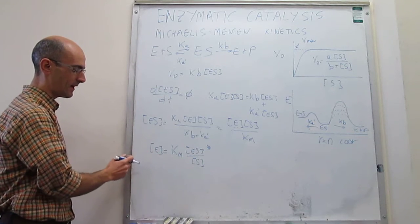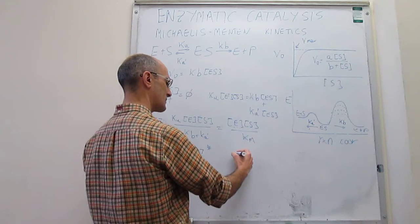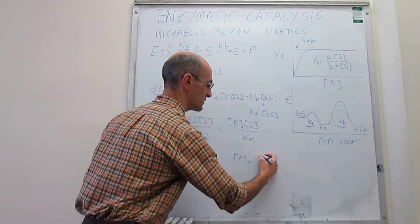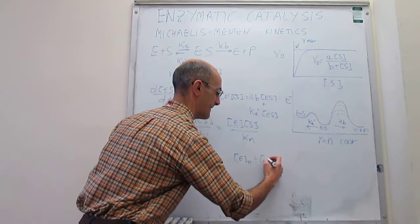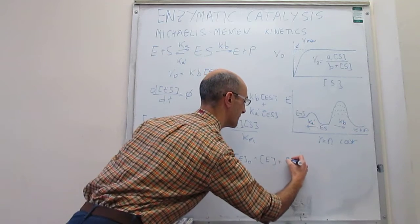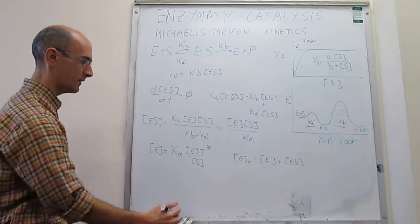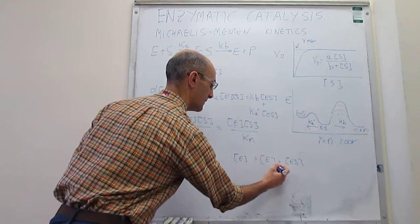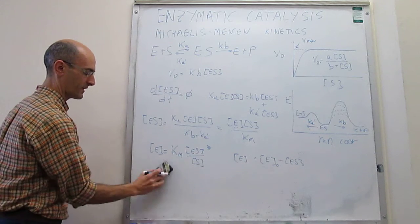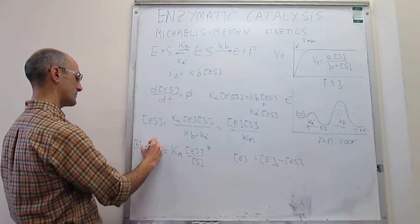Using the mass balance of the enzyme: the concentration of enzyme at the start of the reaction equals the enzyme concentration at any later time. After the reaction starts, the enzyme exists either in free form or as the enzyme-substrate complex: [E]_0 = [E] + [ES]. This gives us a way to find what [E] is and replace it back into our expression.